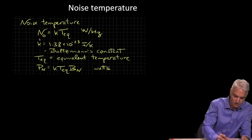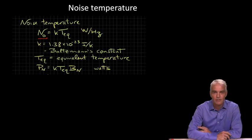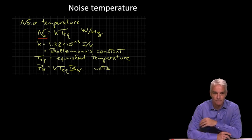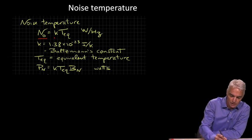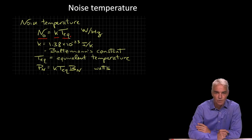Using the noise density, we'll now define another very useful parameter called the noise temperature. The noise temperature is the temperature you would have to have a solid conductor at to generate the same amount of noise. When you heat up a conductor like copper, the electrons move faster and faster, and that generates electrical noise. The amount of electrical noise is given by Boltzmann's constant k times the temperature. To characterize the noise density in a radio, we use this noise temperature, and there's a one-to-one relationship through Boltzmann's constant.